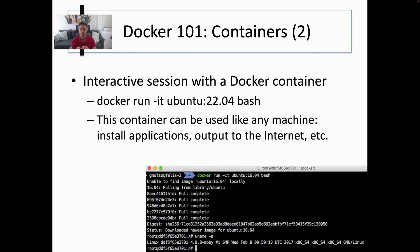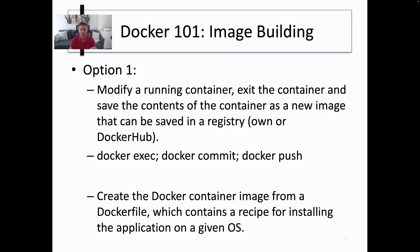You can also issue an interactive session with a Docker container using the -it parameters, and then you can use it as if it was a virtual machine. But you have to remember that this is still a process — an encapsulated process — and the underlying file system is stored on the Docker host. You have a contained process that you can run and install applications in, and it behaves as if it was a virtual machine. You can also create images: you can modify a running container, install an application in the container, exit the container, save the contents as a new image, and then push this image into a registry. But this is not the most appropriate approach — it's better to create a Dockerfile.